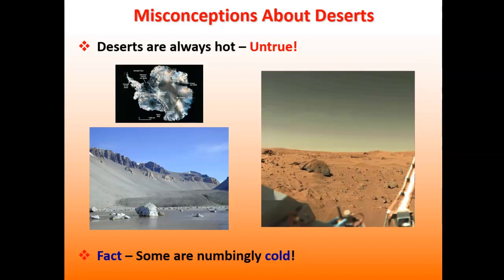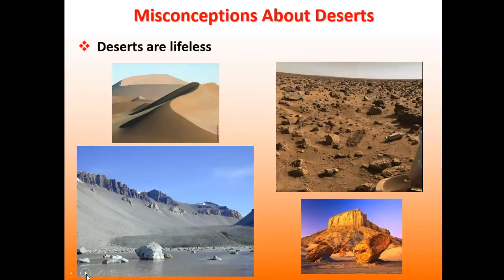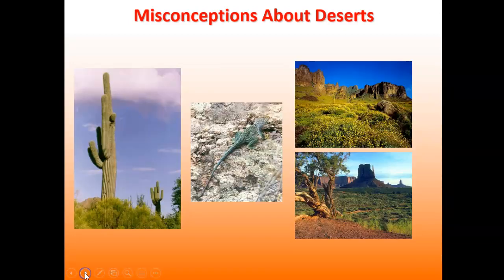Another misconception is that deserts have to be hot. Temperature of the air is actually a big driver for how much moisture an area gets. Hot air has the capacity to store a lot of water vapor, while cold air cannot store as much. In areas that are super cold, there just isn't much moisture available, which can lead to low rainfall.